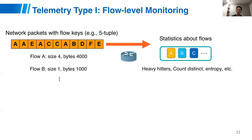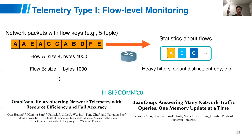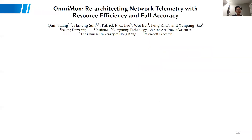Flow monitoring usually tries to estimate some statistics about all flows. For example, heavy hitters would be the largest flows in the network, or count-distinct — counting the number of distinct flows following certain flow keys — or entropy. In this domain, there will be two papers presented at SIGCOMM. One is called Omniman: Rearchitecting Network Telemetry with Resource Efficiency and Full Accuracy. This paper is from Peking University, Chinese Academy of Science, Chinese University of Hong Kong, and Microsoft Research.